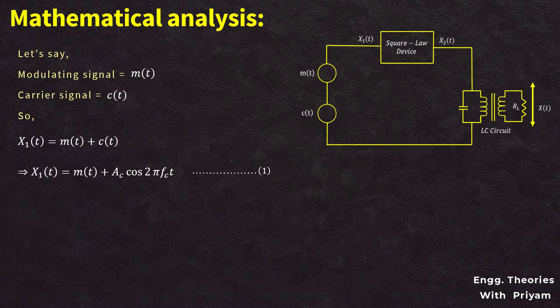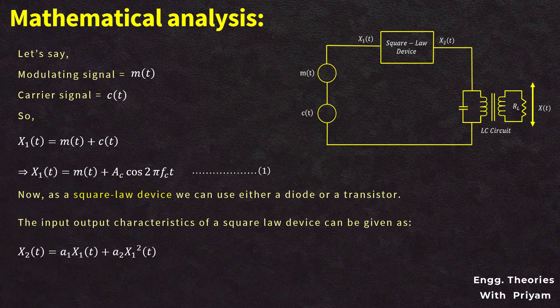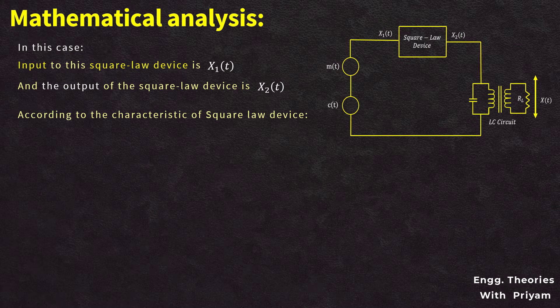As a square law device, we can use either a diode or a transistor. The input-output characteristics of a square law device can be given as: x2(t) = a1·x1(t) + a2·x1(t)², which is equation number two. Here a1 and a2 are constants. The input to the square law device is x1(t) and the output is x2(t).